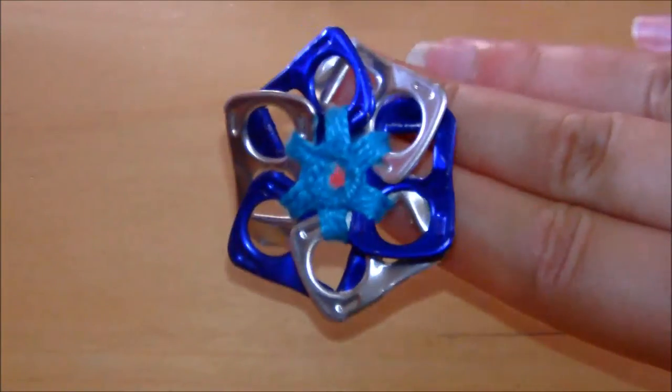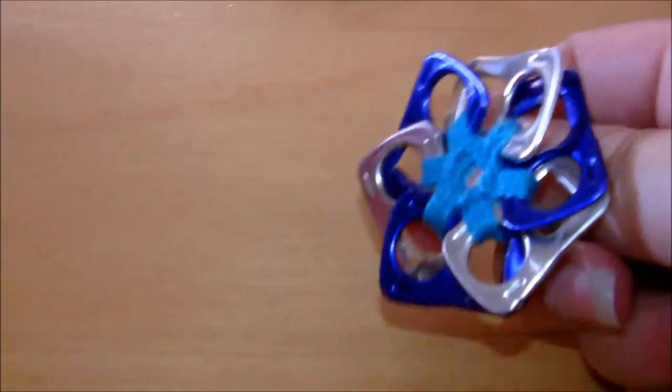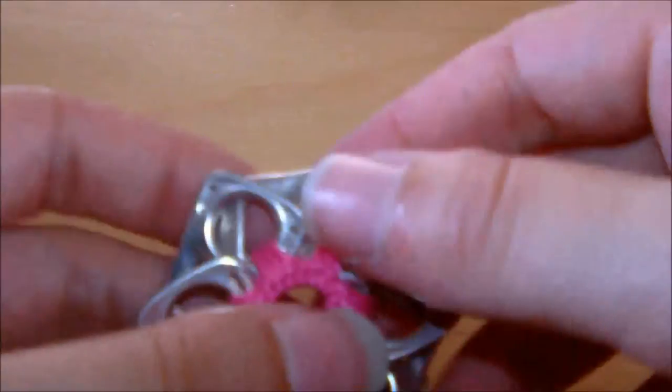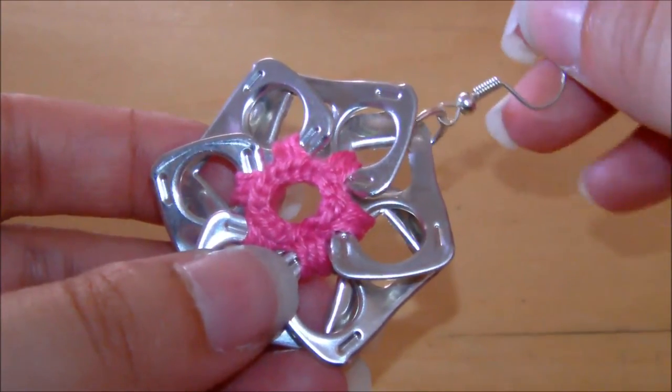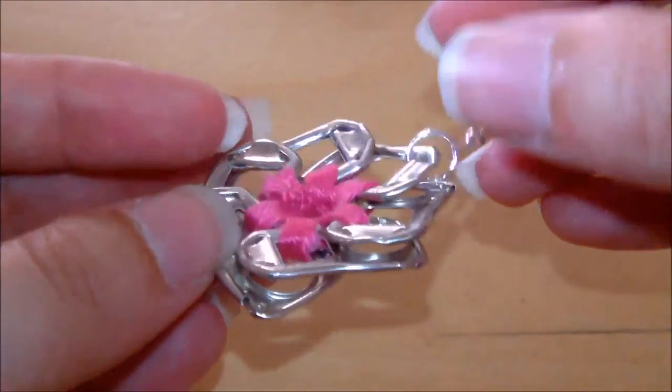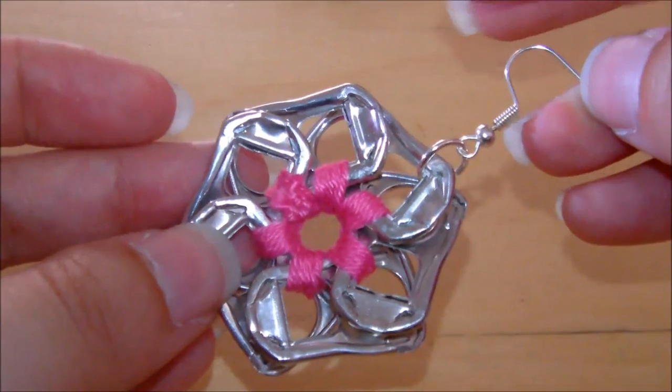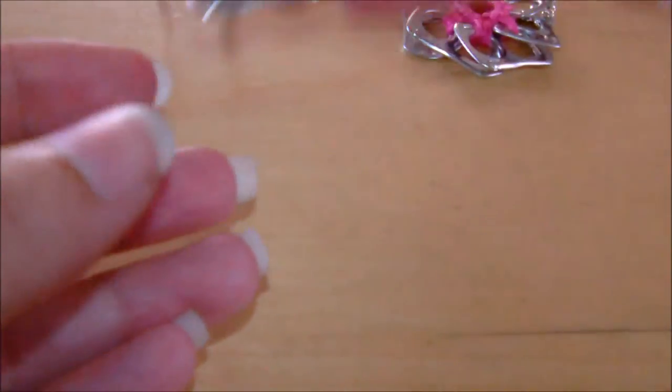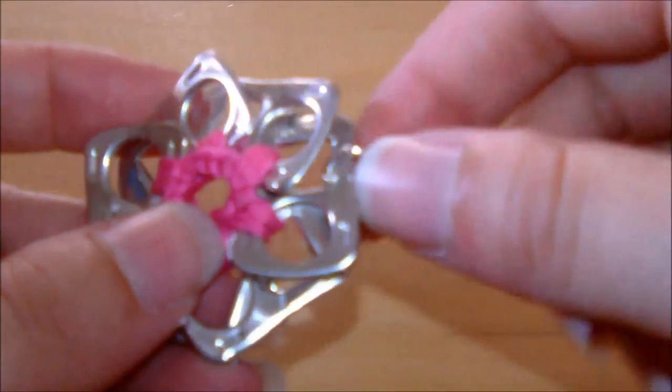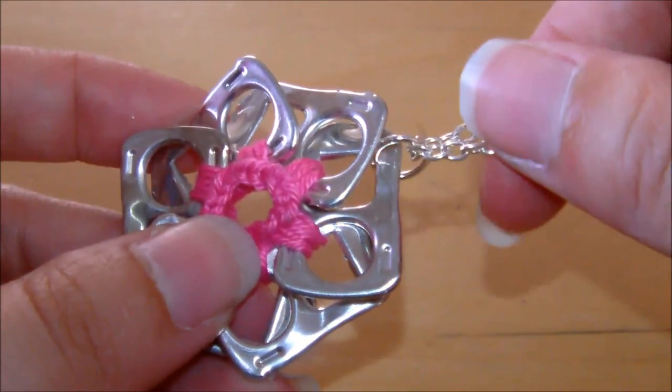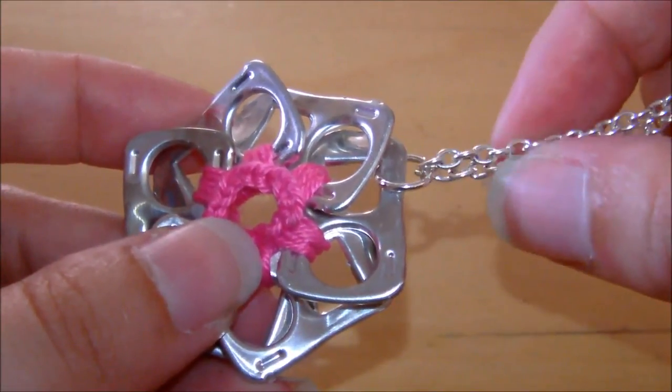Okay, so you can also make other things using a similar technique. What you can also do is, like, make earrings. All you have to do is do the flowers the exact same way, except if you add a jump ring to one of the pop tabs, and then obviously put the hook on. And a necklace is exactly the same thing, just add the jump ring, and add a chain or necklace to it, and you're done. Okay, thank you, bye!